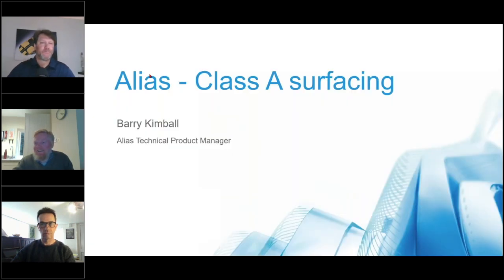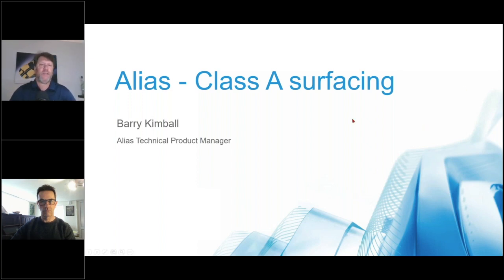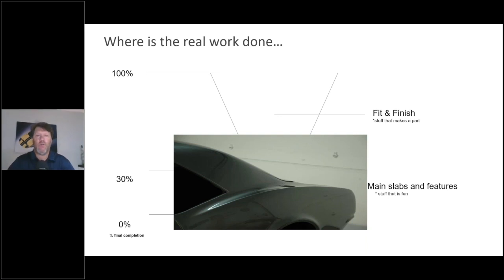I'll hand over to our first guest speaker Barry, who's going to talk about Class A and show some live tools in Alias. Thanks Phil, I appreciate it. So I'd like to start with what I believe Class A is and what it's not. A lot of people believe that Class A surfacing is all about making these really smooth, big, flowing surfaces — probably something like this in your mind. But I'd like to reinforce that that's actually not the hard work. Those big slabs are nice, but not that complicated — and that's about 30 percent of the work.